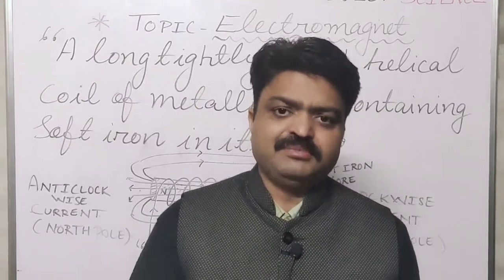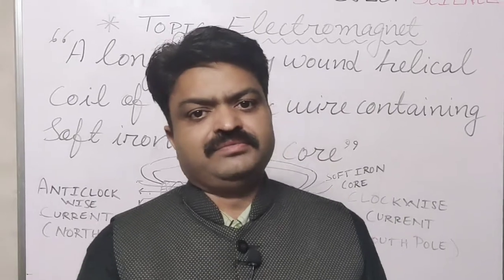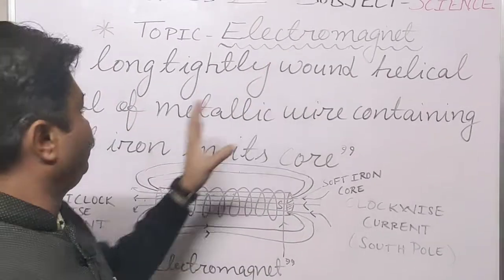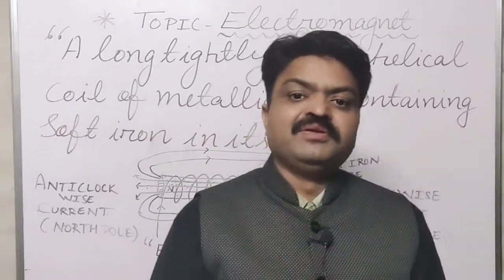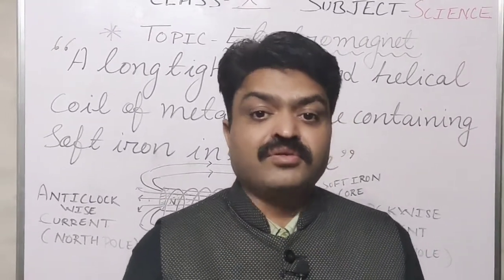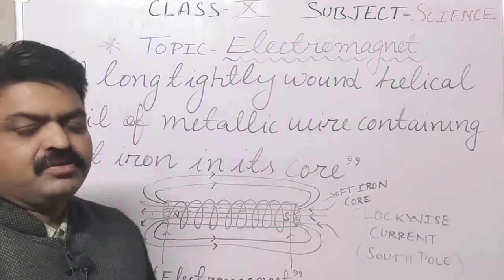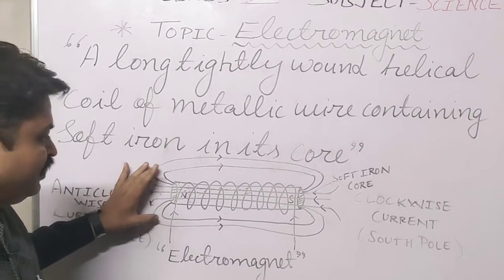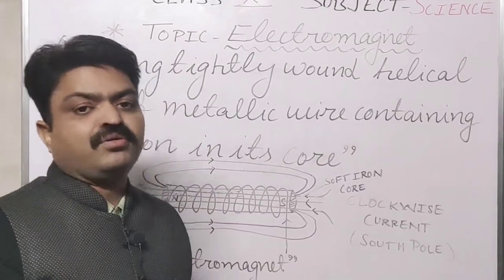In the previous segment, we discussed about the solenoid. A long tightly wound helical coil of insulated metallic wire is known as a solenoid. But what is an electromagnet? It is also a long tightly wound helical coil of metallic wire, but in this, the metallic wire contains one soft iron rod inside it. The device that is produced is known as an electromagnet. This is the diagram of an electromagnet in which a soft iron rod is placed inside the core of the solenoid.